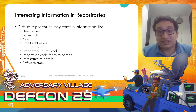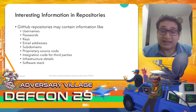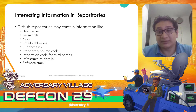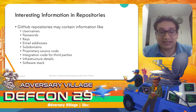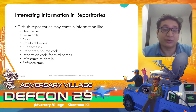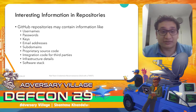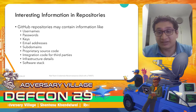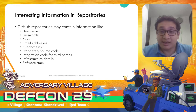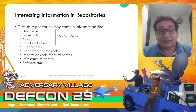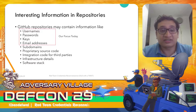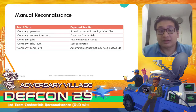We can find several critical pieces of information inside GitHub repositories — usernames, passwords, keys, email addresses, subdomains, proprietary source code, and even the software stack. In this talk, we are going to focus on the credentials path. One of the ways we do GitHub reconnaissance is manual reconnaissance.